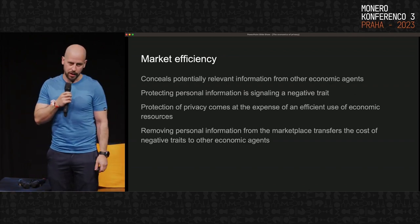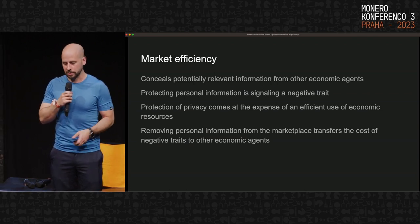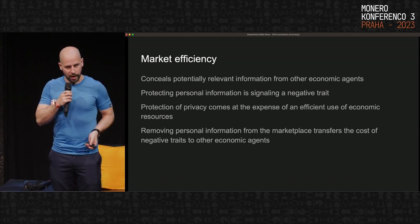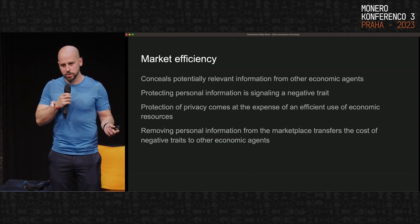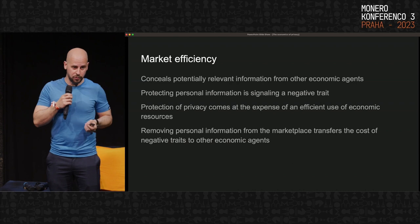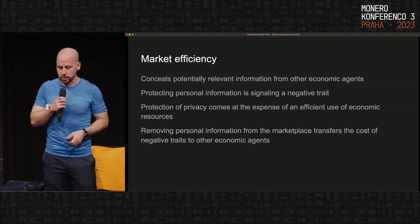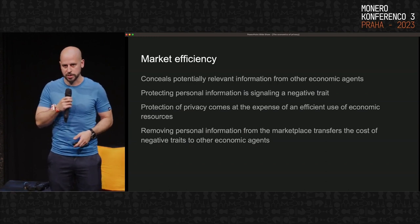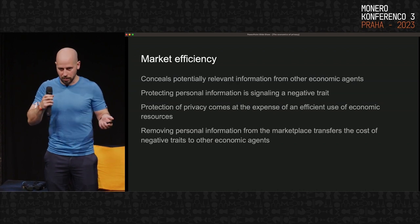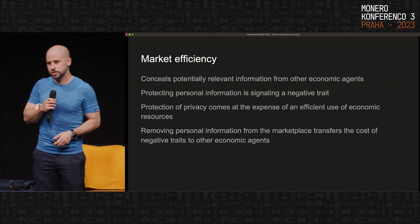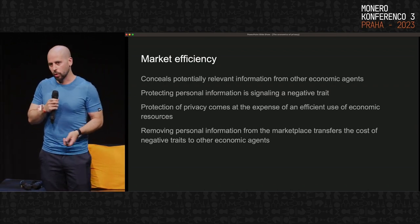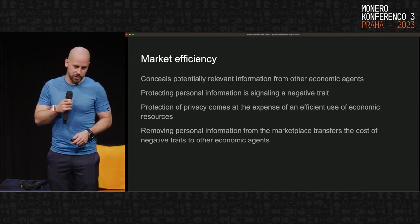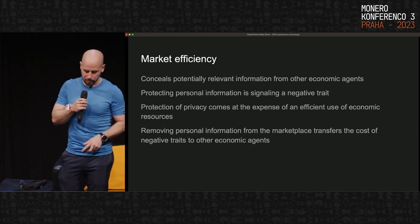The first argument often made against privacy regulation is that it conceals potentially relevant information from other economic agents. A related argument is that if you are personally protecting your information, you are signaling a negative trait. If this information is then removed from the marketplace because privacy regulation says you can't publish or ask for it, this transfers the cost of those negative traits to all other economic agents — which is why privacy regulation is seen as a bad idea.